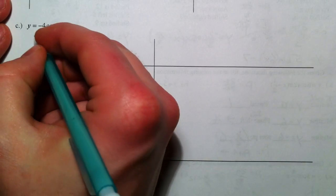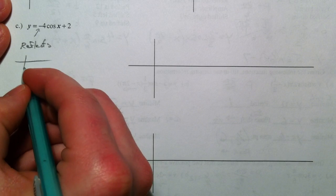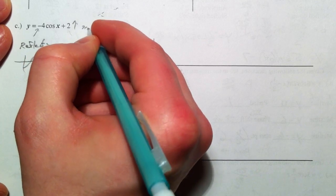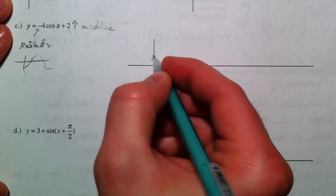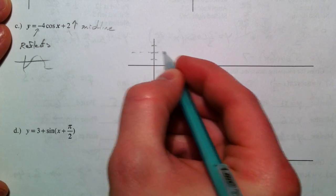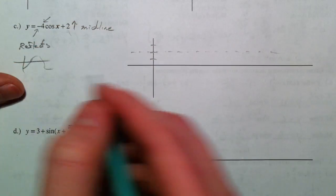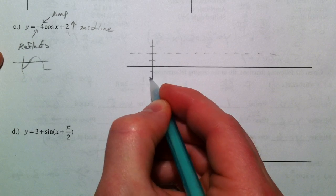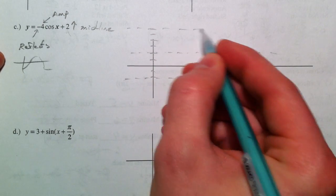The negative reflects it, which makes it start at the bottom. And the 2 shifts it up 2, so it's going to be centered at 2. The amplitude is 4, so from 2 it's going to go down 1, 2, 3, 4 — that's the min line. And it's going to go up 1, 2, 3, 4 — that's the max line.